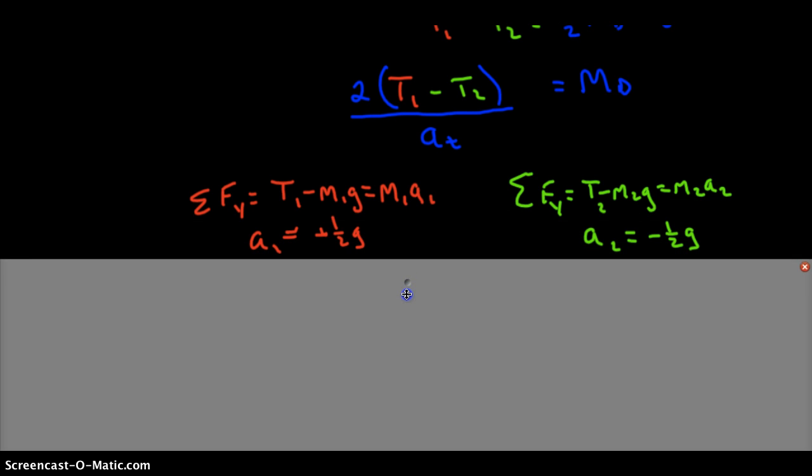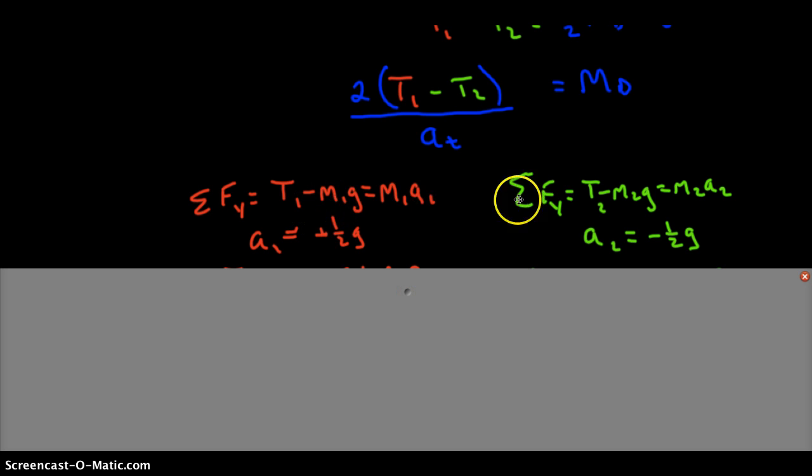All right, so take a look at these two equations. This is what we had up above, and we're going to substitute the value for acceleration that we've been given, plus one-half g for A1, minus one-half g for A2.